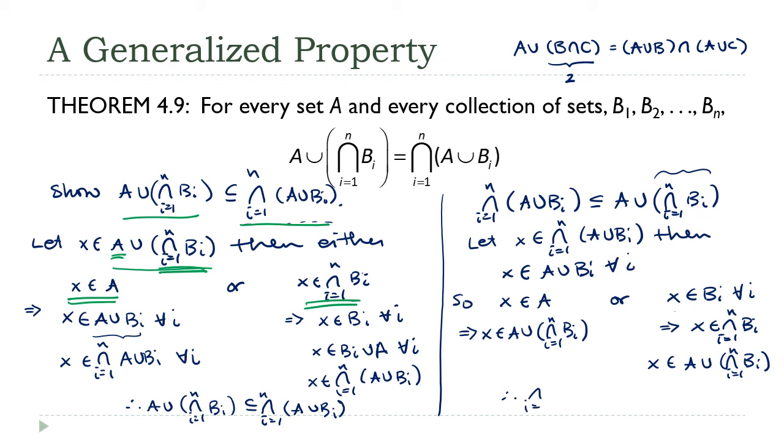Therefore, the intersection I equals 1 to N of A union B sub I is a subset of A union the intersection. Since we've shown both subset relationships, the two sets are equal. A union the intersection is equal to the intersection of A and the union, which is what we wanted to show.